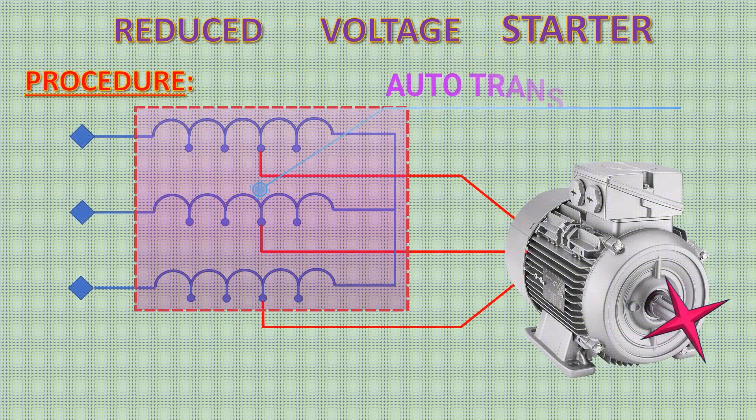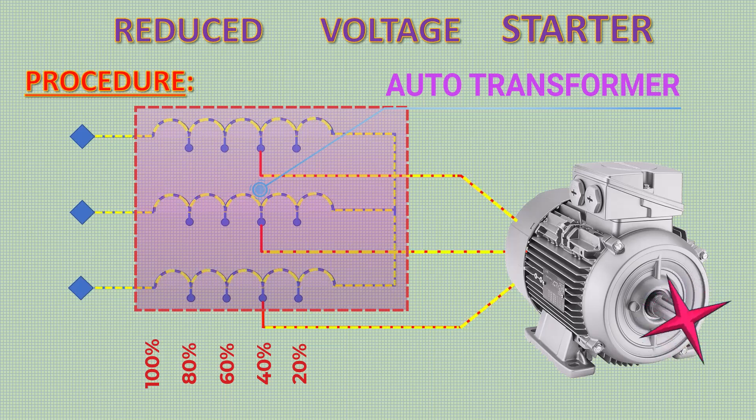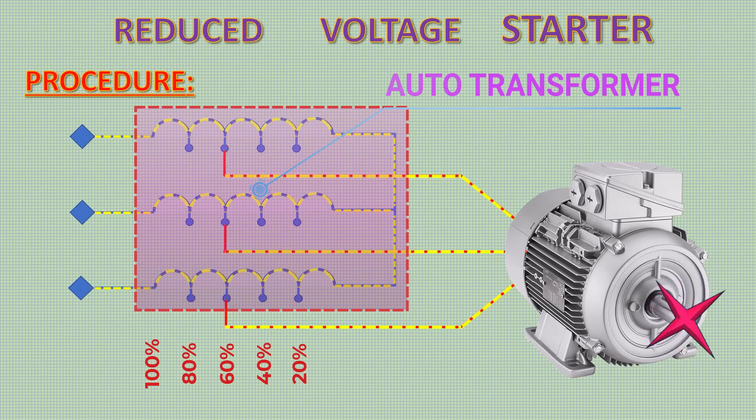Here auto transformer is used to reduce the voltage. In this example, motor is getting full voltage by changing taps like this way.